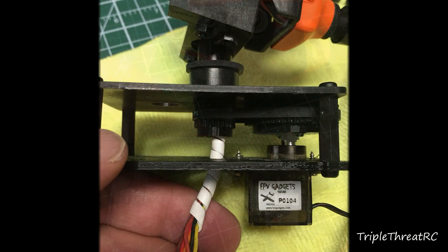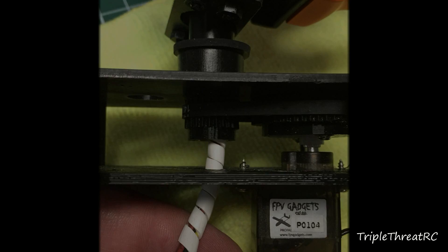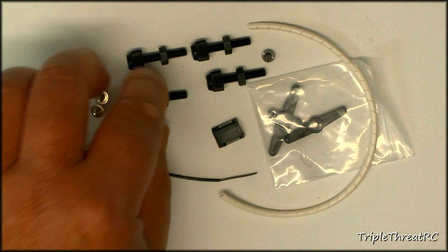Also included in the little goodie bag were these really cool four millimeter nuts and bolts that I ended up using to mount my ProPan.